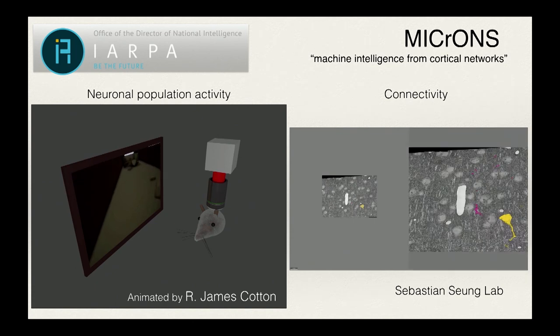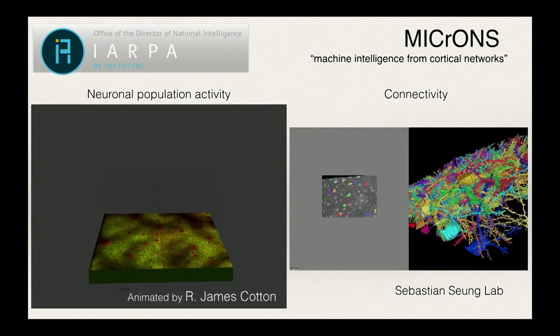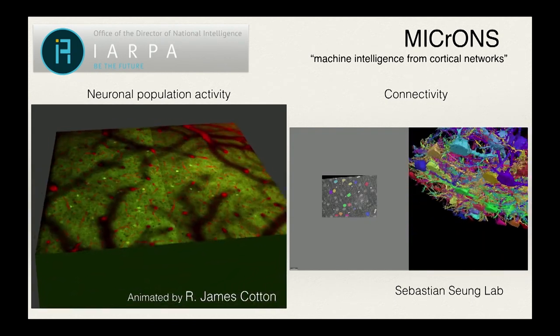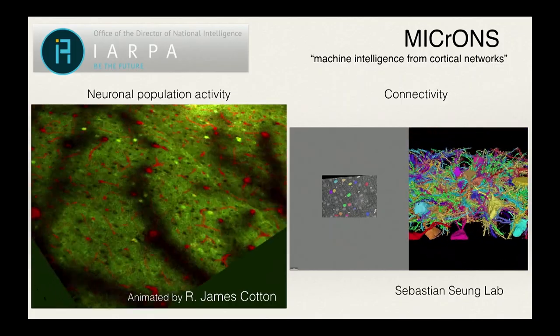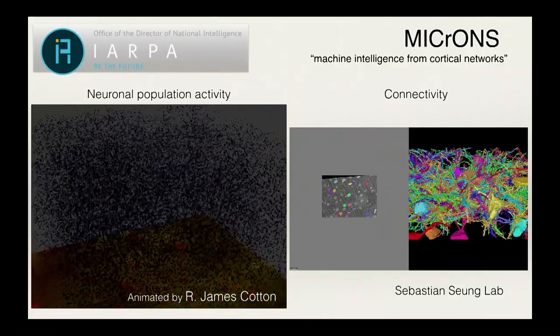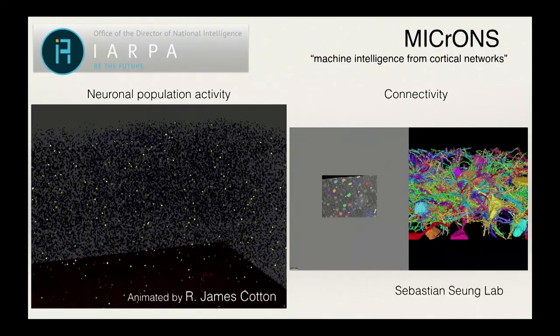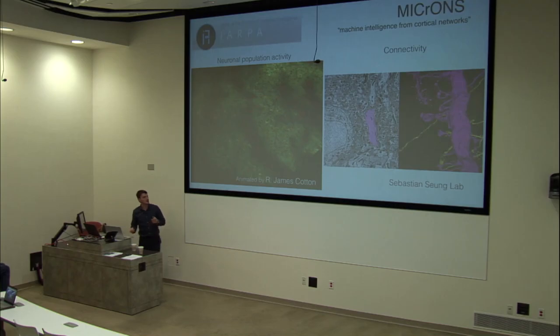Another dimension is data-centric projects — not just data-rich but data-centric. One example is Microns, where our lab performs massive measurements of neuronal population activity using two-photon imaging combined with connectomics using electron microscopy. In a data-centric project, the data is the principal output — not just confirming or testing a hypothesis, but delivering data to the broader scientific community.